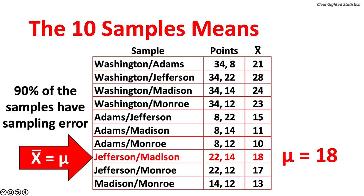Remember, the population mean was a score of 18. Nine of the ten samples, 90 percent, have sampling error. Only one sample, Jefferson-Monroe, has a sample mean that equals the population mean.